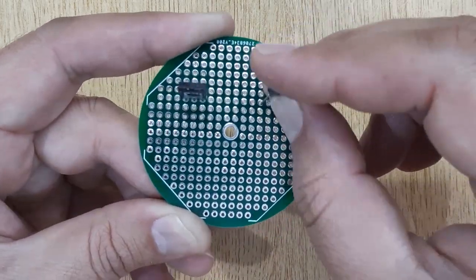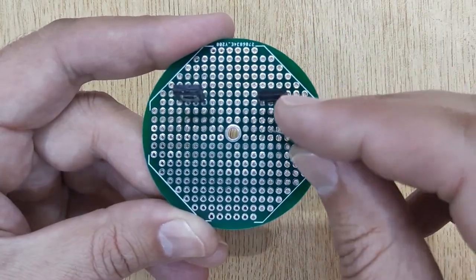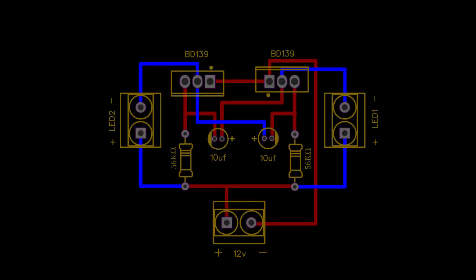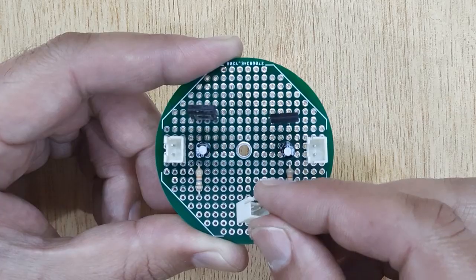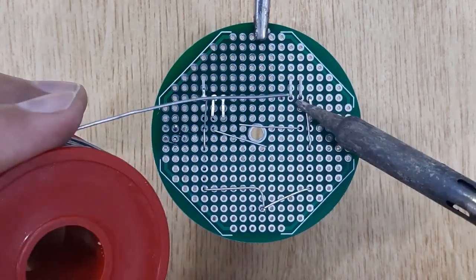Now insert all the electronic components into the PCB one by one according to the circuit diagram shown on the screen, and solder all of them.